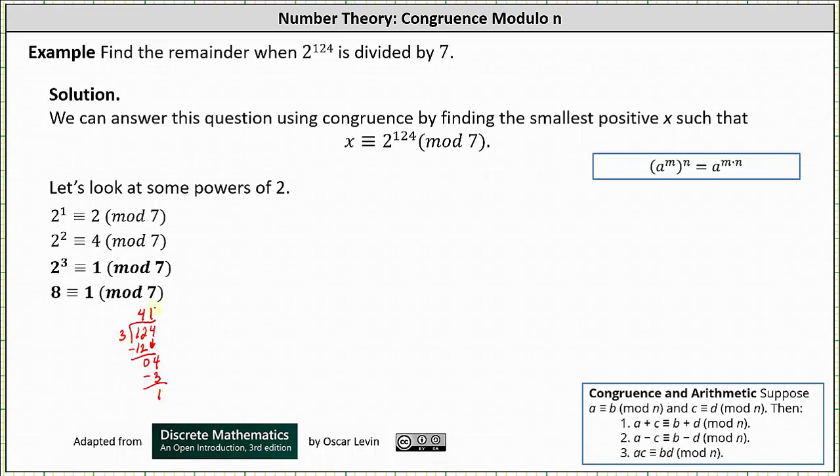124 divided by 3 equals 41 with a remainder of 1, which indicates we can express 2 to the power of 124 as 2 cubed raised to the power of 41 times one extra factor of 2.